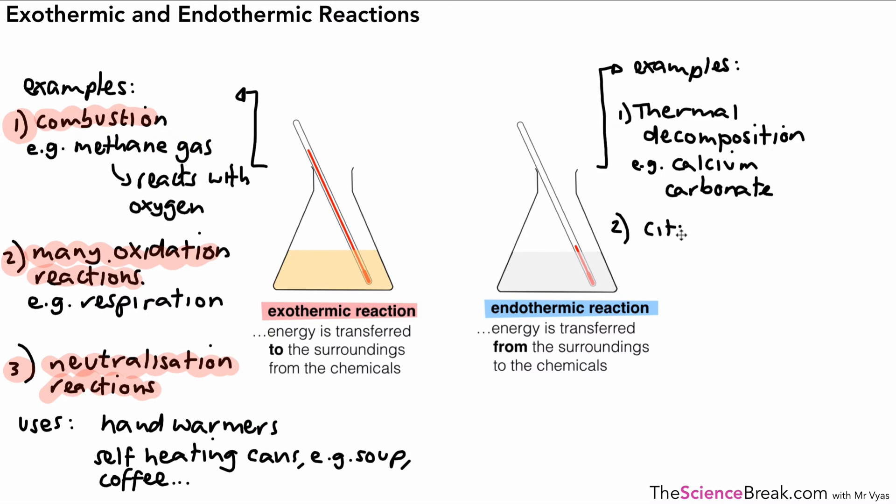A second example would be quite a specific one and this is the reaction between citric acid and sodium hydrogen carbonate. So citric acid with sodium hydrogen carbonate. Remember hydrogen carbonate is actually one word. Now these sounds like some fancy chemicals but actually they are found in sherbet sweets that give you that kind of fizzy feeling in the mouth and that's actually an example of an endothermic reaction.